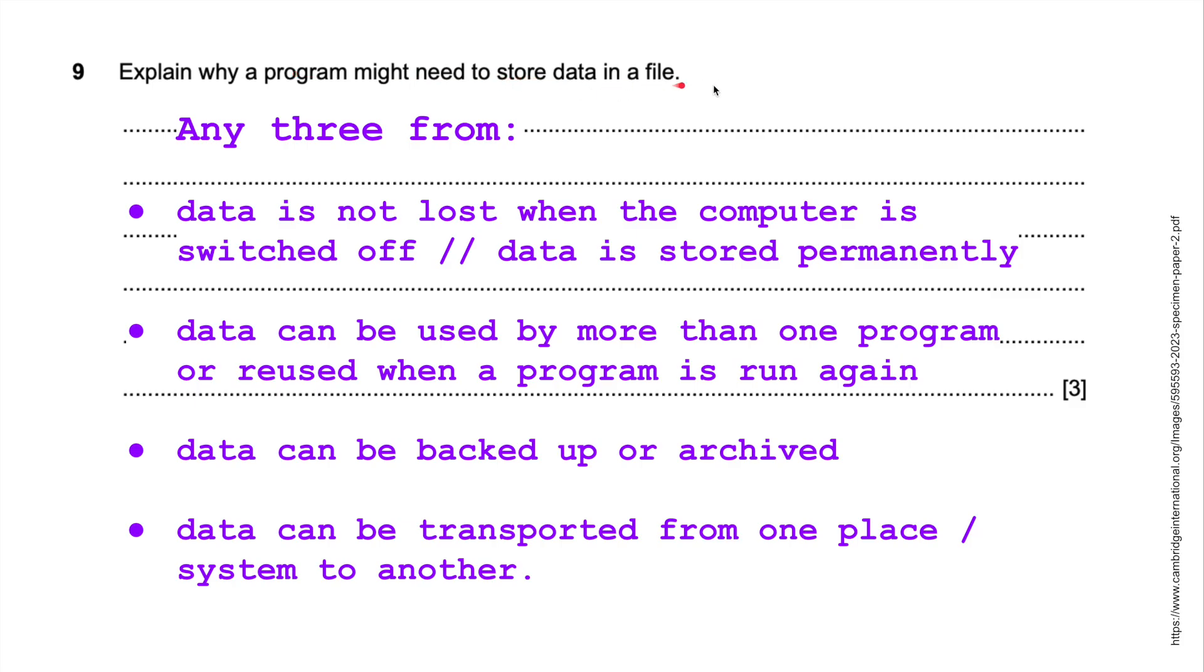Explain why a program might need to store data in a file. Well, any three of these. Data is not lost when the computer is switched off. So think about it like that. If you save a Python file, .py, onto your computer, then you can open it again when you turn your computer off. Data is stored permanently. Data can be used by more than one program or reused when a program is run again. Data can be backed up or archived. And data can be transported from one place, one system, to another. You can email the program to other people. That's a little bit confusing because it says explain why a program might need to store data in a file. You might be thinking, hang on, a file such as an array, and storing data in an array. No, it doesn't mean that. So the mark scheme would say array in that case. This is just saying a file.